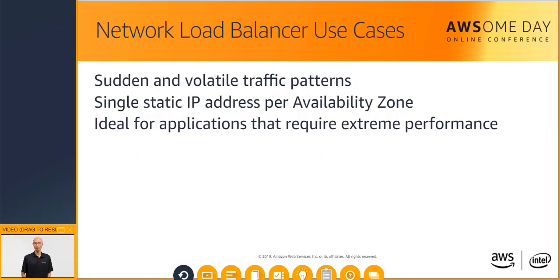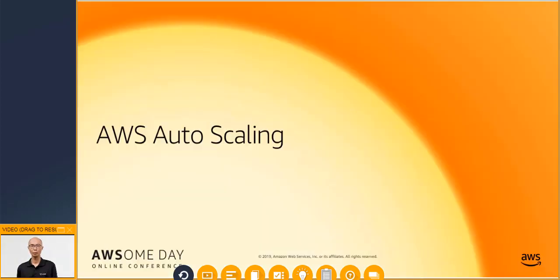The Network Load Balancer is optimized to handle sudden and volatile traffic patterns while using a single static IP address per AZ. Because it can handle millions of requests per second while maintaining ultra-low latency, it is ideal for applications that require extreme performance. And to complete the compute conversation, we will now touch on auto-scaling.